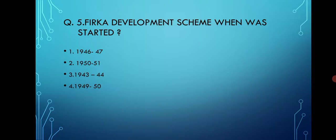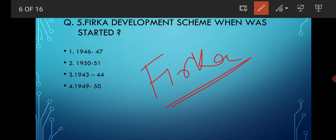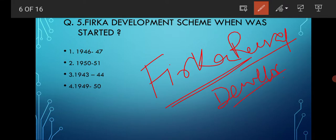When was the Firka Development Scheme started? This is related to rural development. The options given are 1936, 1947, 1950, 1951, 1943, 1944, 1949, and 1950. The correct option is 1946–1947.